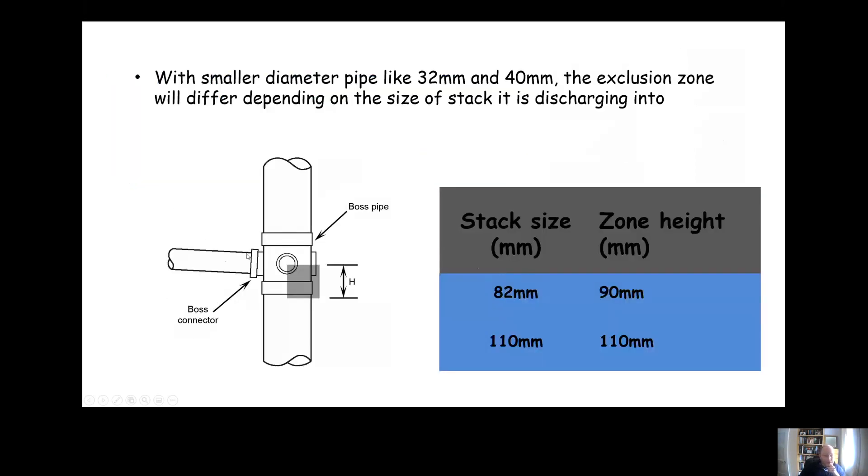If you have smaller diameter pipe going into a stack, then the cross flow sizes are going to be a little bit different. For example, if you had a 32 or 40 millimeter pipe going into a three inch stack or an 82 millimeter stack, you'd make no connections within 90 millimeters opposite. Or if you had a 32 or 40 millimeter pipe going into a four inch stack or 110 millimeter stack, you wouldn't make any connection within 110 millimeters directly opposite.